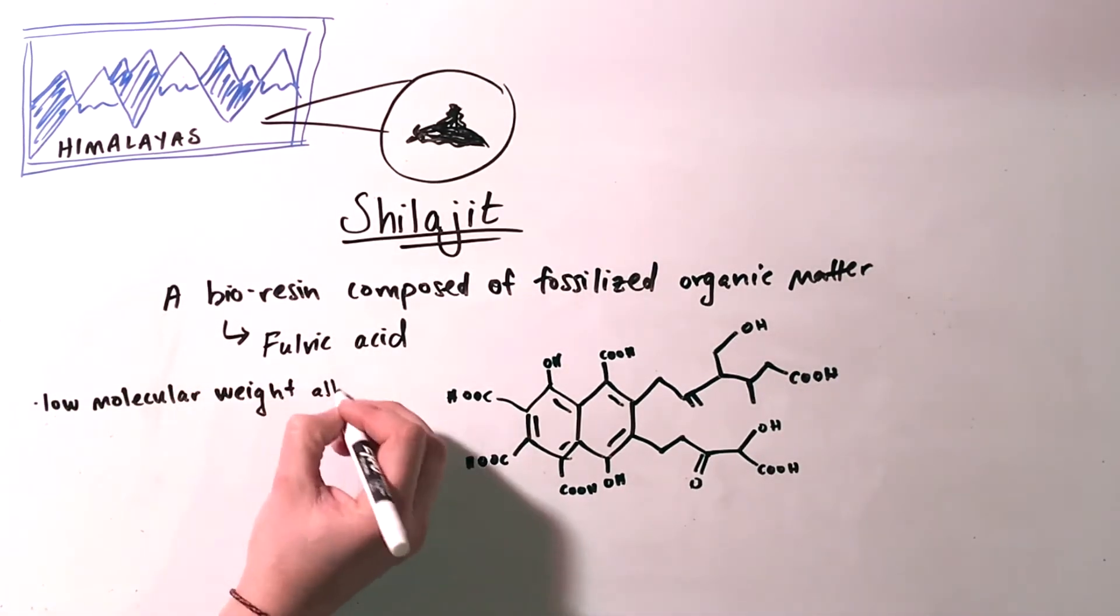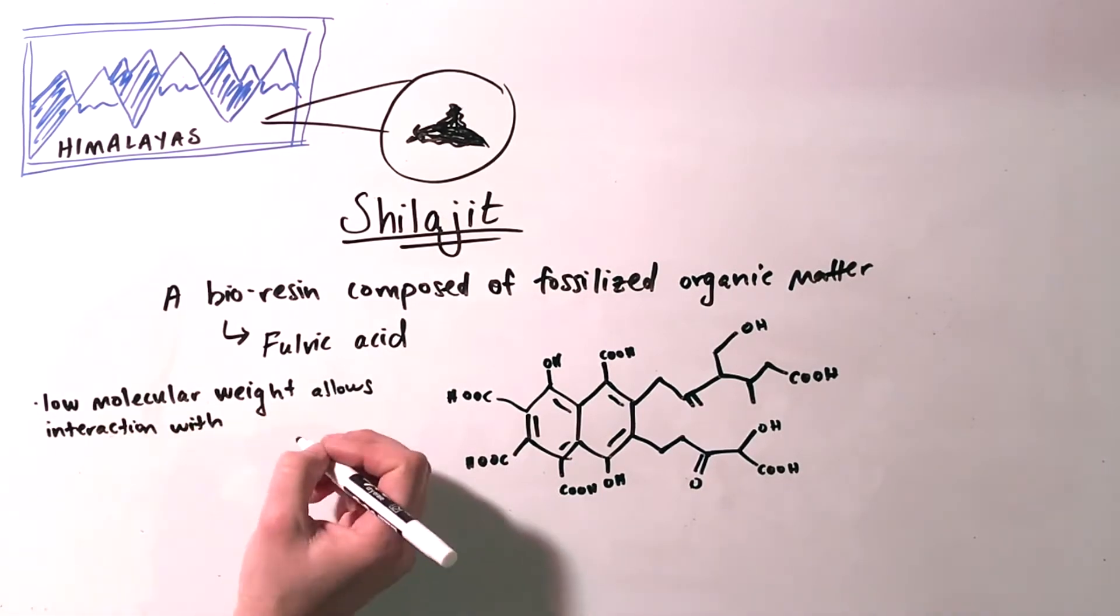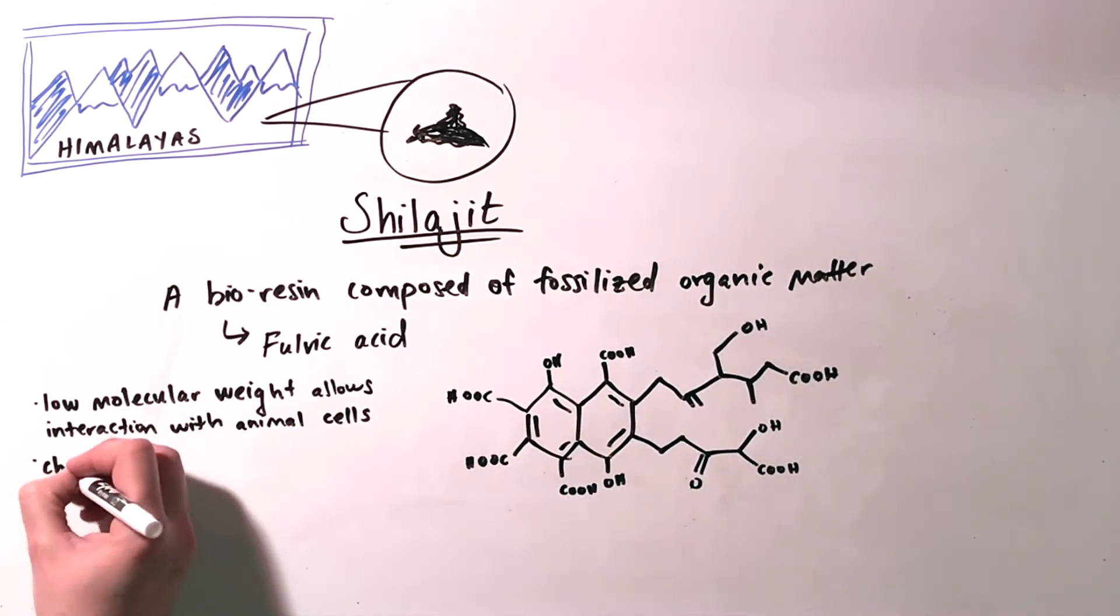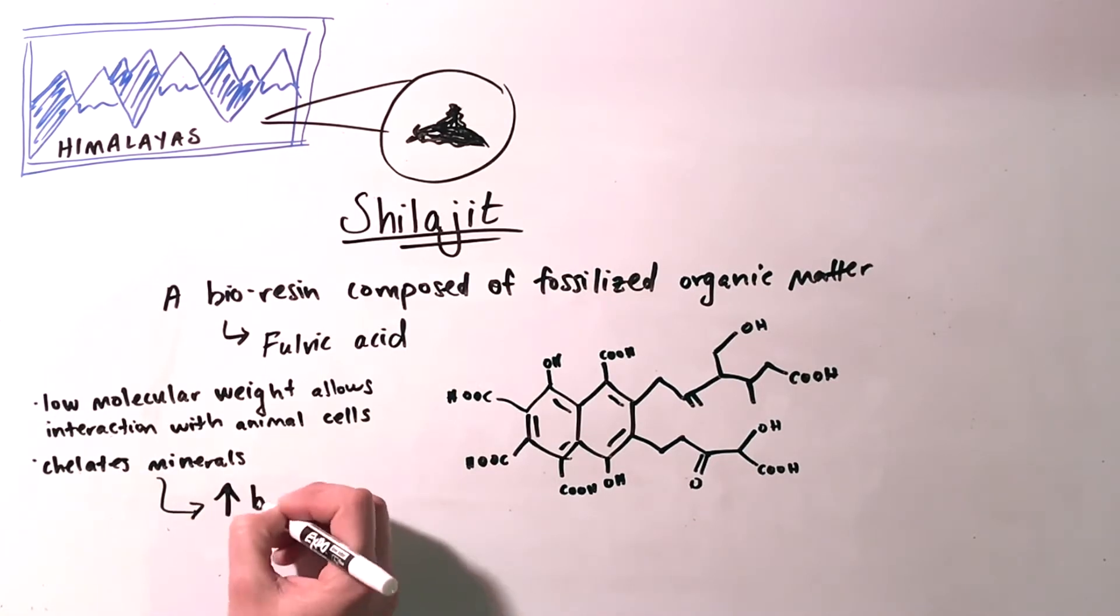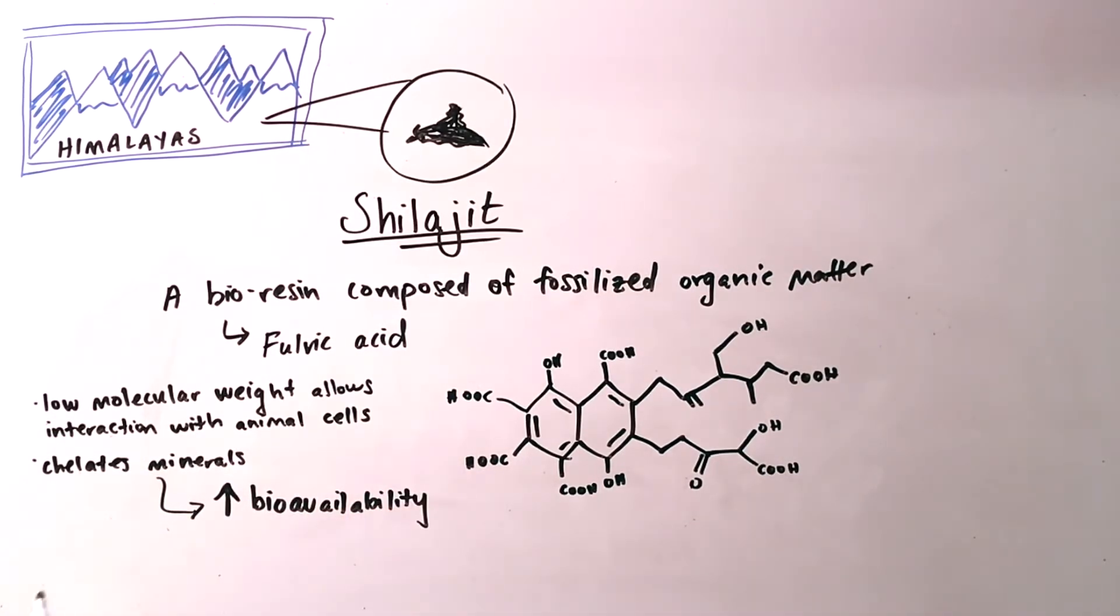Fulvic acids low molecular weight allows it to interact easily with animal cells. It chelates minerals which improves their bioavailability. Because it can act as an electron donor and acceptor, it can neutralize free radicals and has strong antioxidant properties.